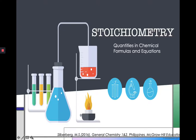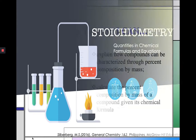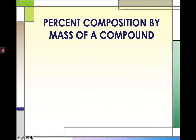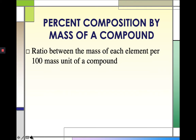Hi everyone. We are still on the unit of Stoichiometry, which deals with quantities in chemical formulas and equations. For this video, we will be explaining how compounds can be characterized through their percent composition by mass. Percent composition by mass tells us how much of a particular element is present in a compound — it's the ratio between the mass of each element per 100 mass units of a compound.